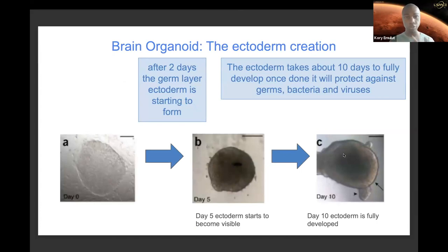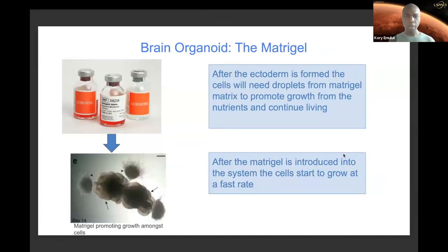Think of the ectoderm as your skin. Your skin protects you from all these germs and bacteria, protecting your inner parts. The ectoderm is just like that but for the cells. So while the cells are undergoing their maturation and getting older, the ectoderm is going to protect them from germs, bacteria, and viruses. But as the cells get older, they're going to start to crave food and nutrients to sustain themselves and keep them living.